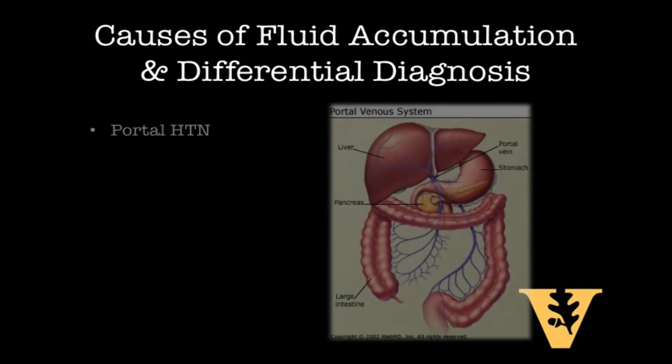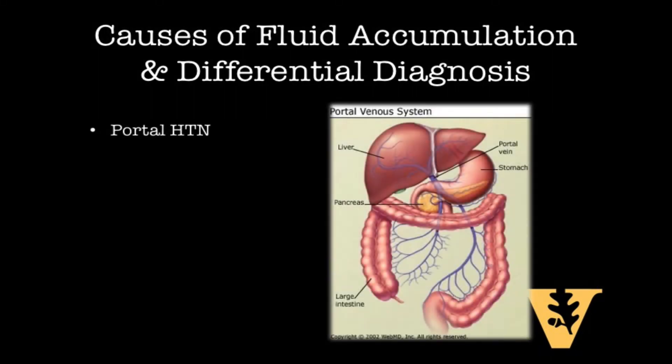Before we dive into the testing, it's good to understand the different reasons people get ascites. The most common reason we'll see in the hospital is from portal hypertension, and one of the most common causes is cirrhosis. However, not all portal hypertension is cirrhosis. It can be caused by venous congestion from left or right heart failure, or veno-occlusive diseases such as Budd-Chiari.